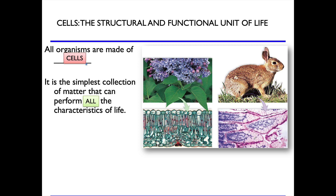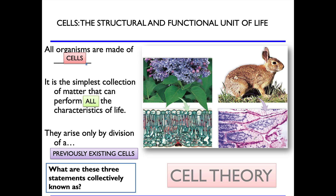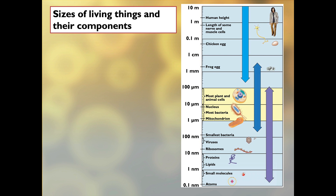Cells are the simplest collection of matter that can perform all of the characteristics of life. So as we went around the wheel and learned what living things do, cells can do them all. Our third statement is that cells arise only by division of a previously existing cell — all cells come from other cells. They go through a process called cell division; they don't just appear out of nothing. These three big ideas are part of the cell theory, which we revisited from our first chapter. Make sure you know them well.